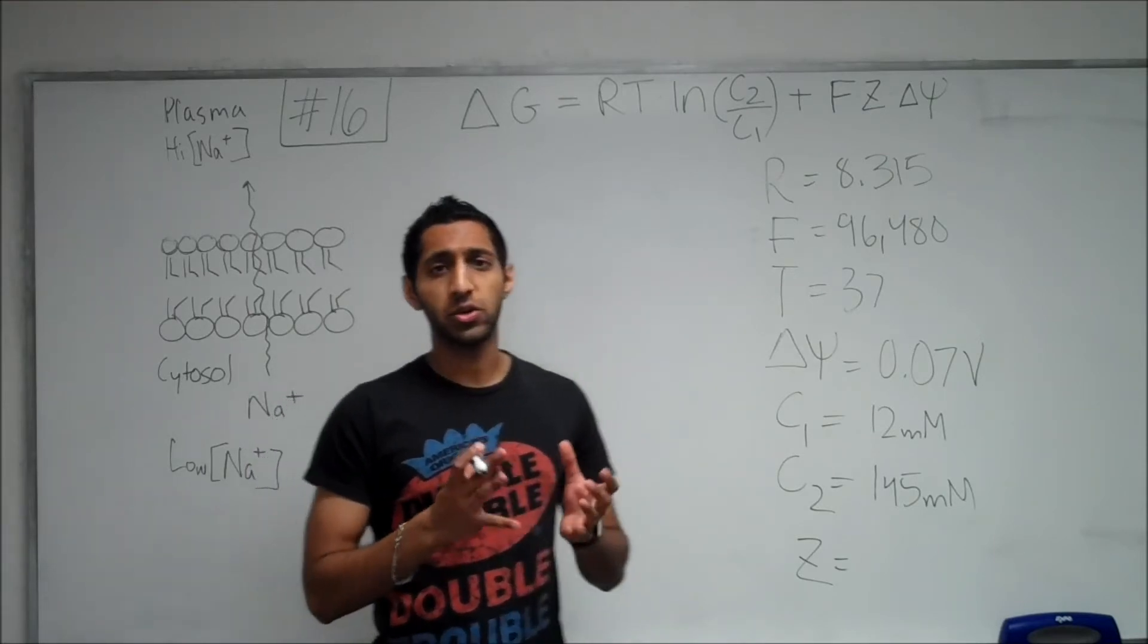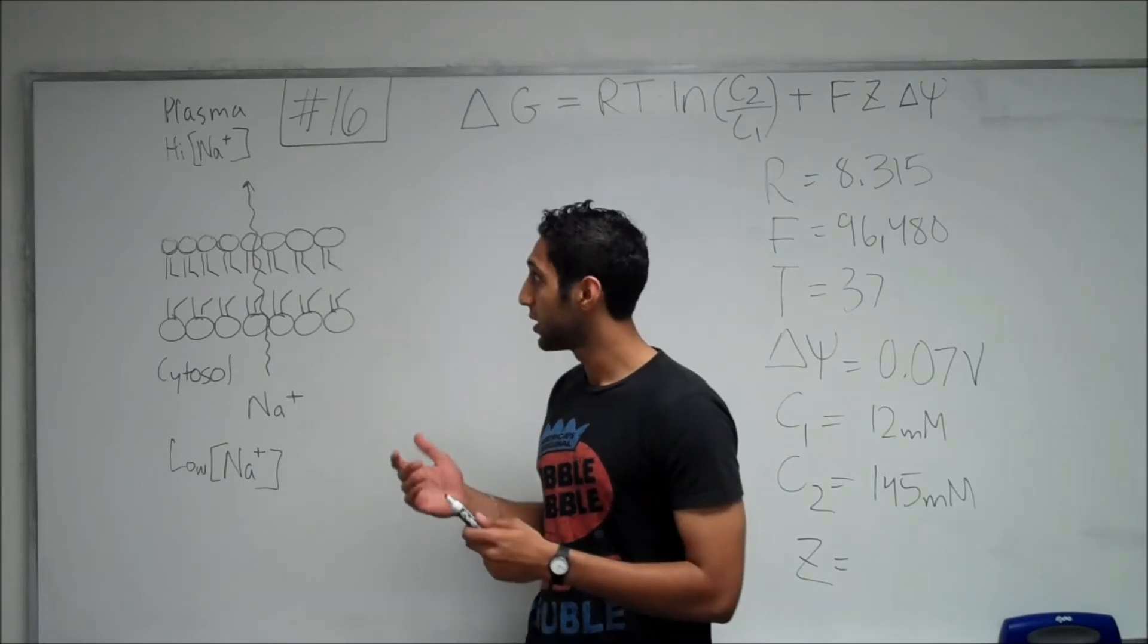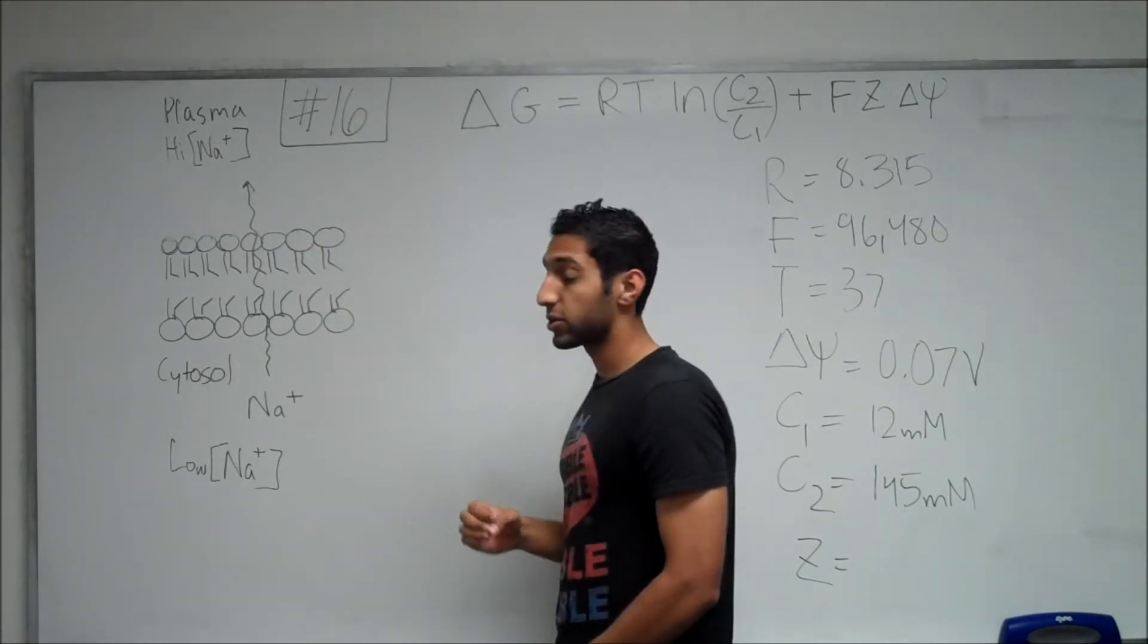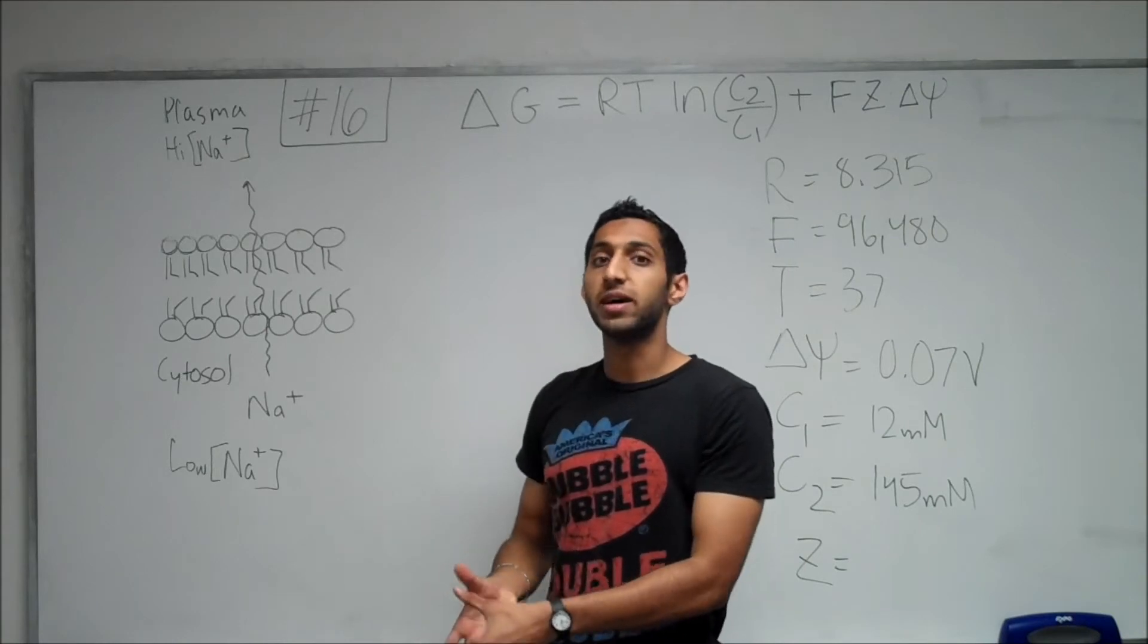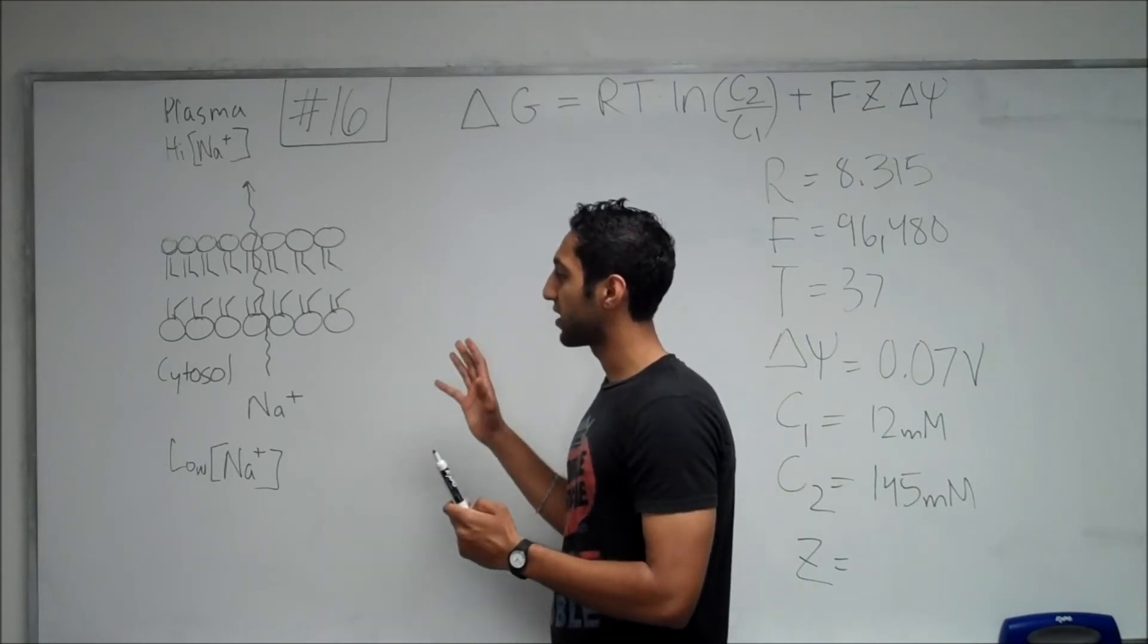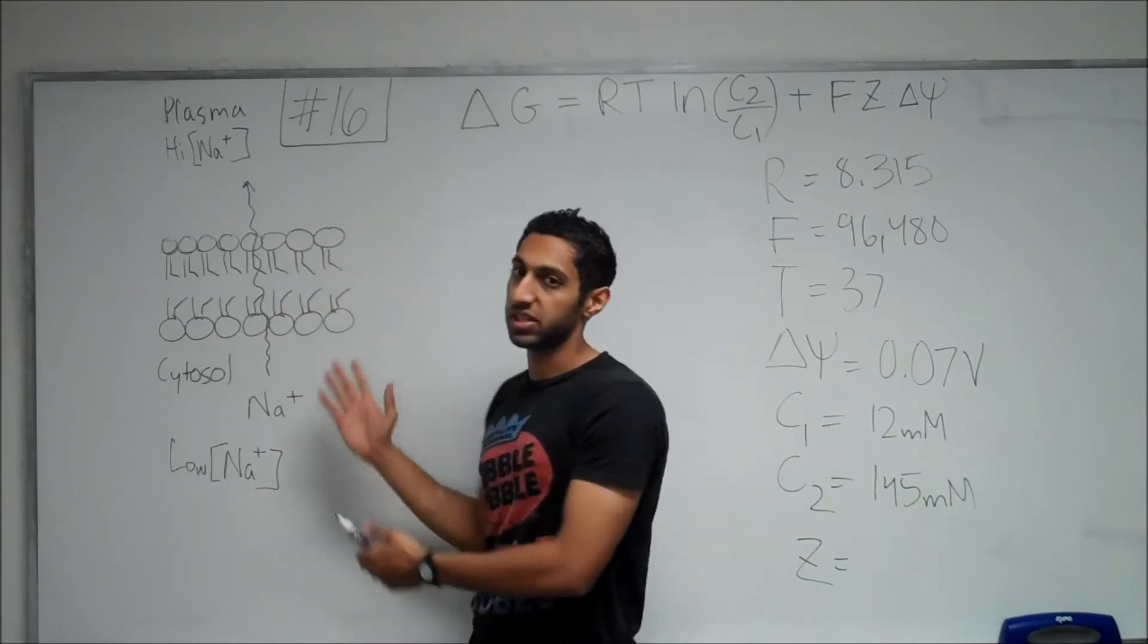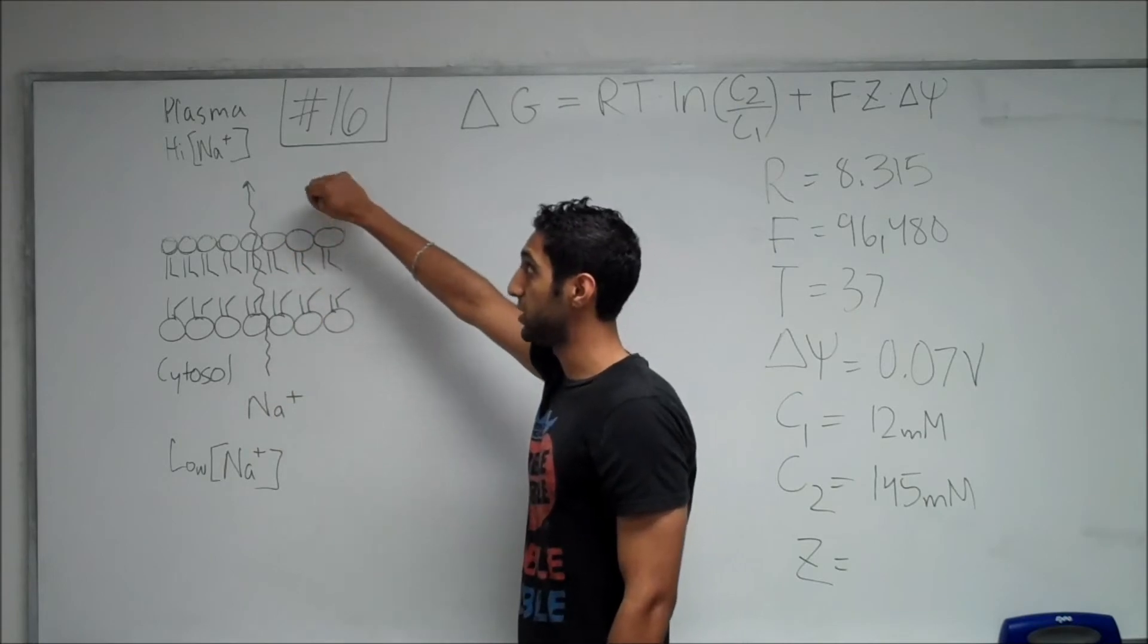Now, you may know the equation to calculate the free energy change right off the bat, but it's useful to know what's going on visually. So, what I have drawn over here is a plasma membrane with different concentrations of sodium on either side of the membrane. We were told that in the blood plasma you have a higher concentration of sodium than in the cytosol. And we're moving the mole of sodium ions across from the cytosol to the plasma membrane. So, we understand that the sodium is going against its concentration gradient. Sodium from the plasma actually wants to go into the cytosol, but we're actually forcing it in the other direction.